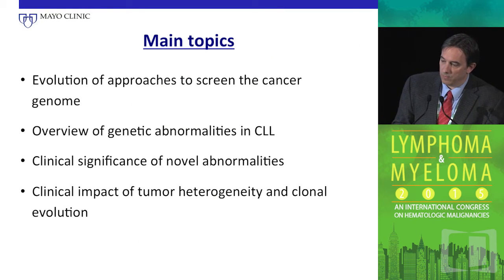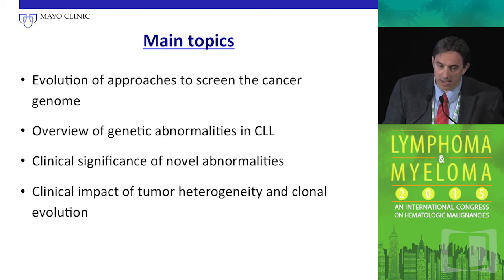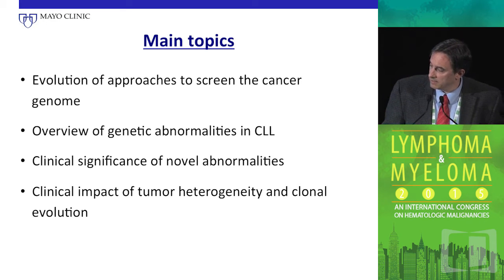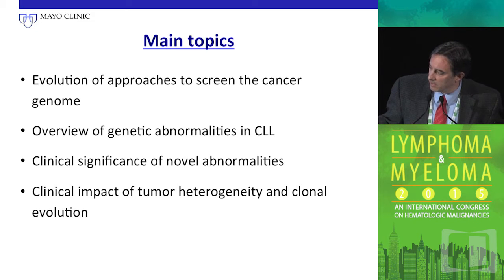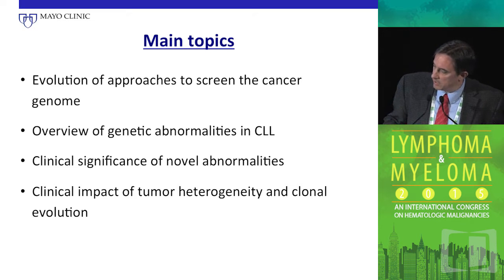I think to separate the learning objectives into four major topics. We'll start with a brief review of the approaches we have acquired in studying cancer in the last few years. As a consequence of that, what new abnormalities have been identified. More importantly, what we can do with that information at the clinical level. And finally, clonal heterogeneity and evolution of the disease — how that fits clinically and why it's so important when thinking about treating patients in a more personalized way.